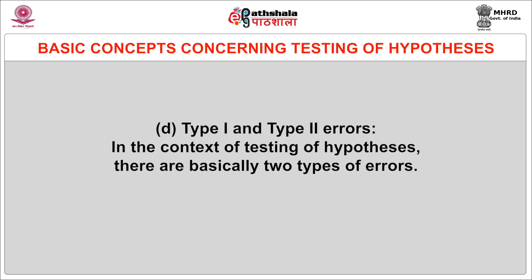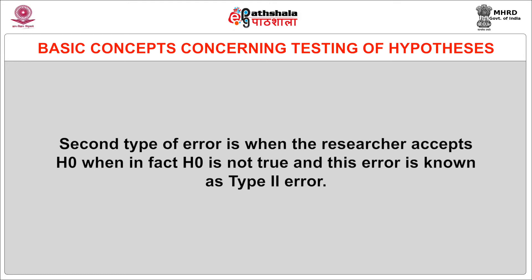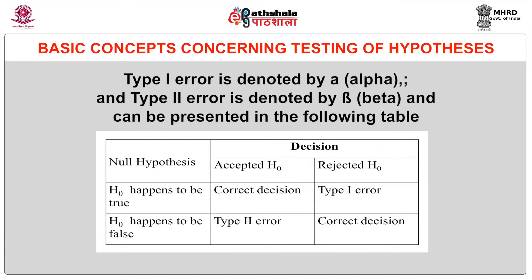The next concept is errors. In the context of testing of hypothesis, there are basically two types of errors. One is that the researcher may reject the null hypothesis when it is actually true — this is known as Type 1 error. The second type of error is when the researcher accepts null hypothesis when in fact it is not true — this error is known as Type 2 error. In other words, Type 1 error occurs when we reject a hypothesis which should have been accepted, and Type 2 error occurs when we accept a hypothesis which should have been rejected. Type 1 error is denoted by alpha and Type 2 error is denoted by beta.